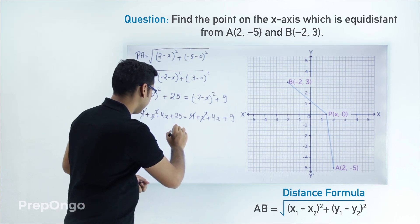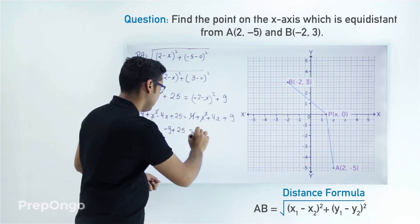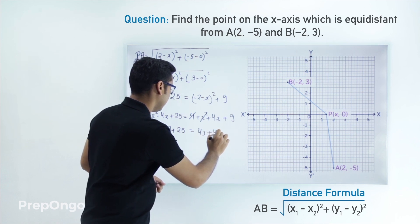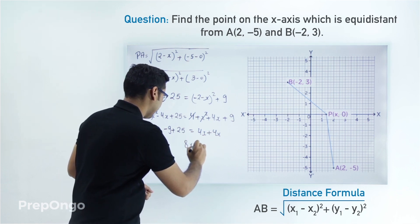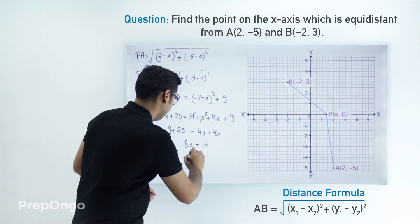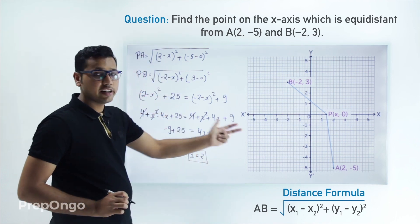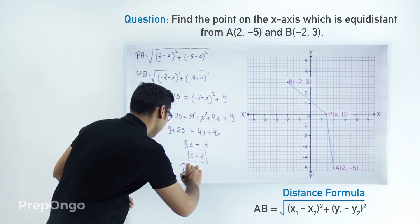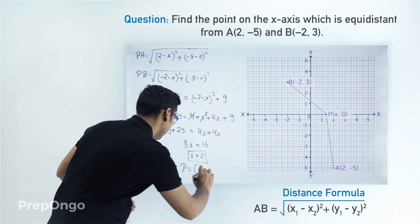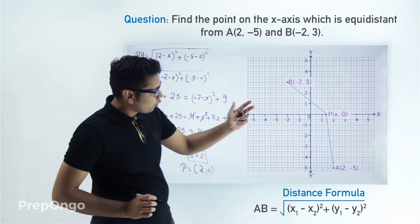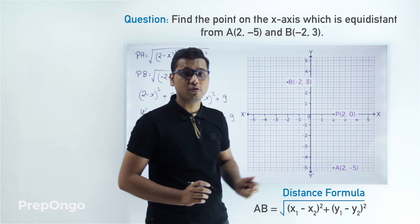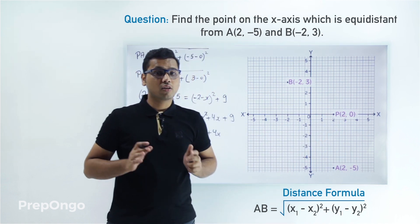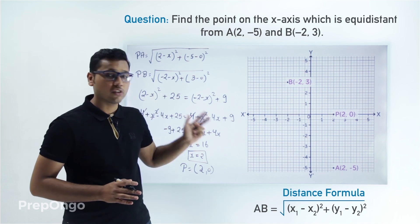Bringing terms across: -9 + 25 = 4x + 4x, which gives 16 = 8x, so x = 2. Therefore the coordinates of point P are (2, 0). So point P is located at (2, 0) on the x-axis. This is how we calculate the coordinates of a point which is equidistant from two given points.